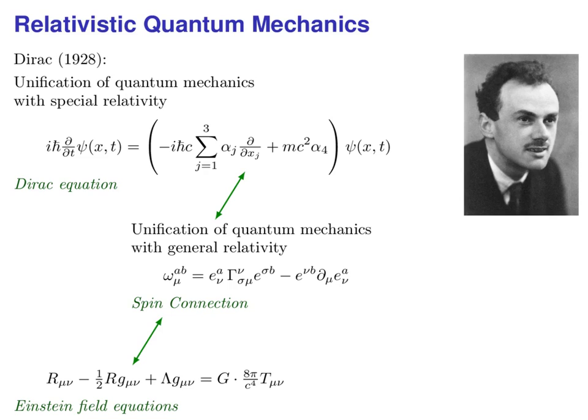Can we also unify quantum theory with general relativity with space-time curvature? Yes, we can. Using the so-called spin connection we can combine the Dirac equation and Einstein's field equations to a unified differential equation.